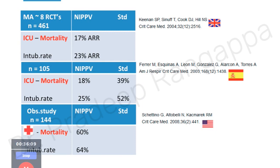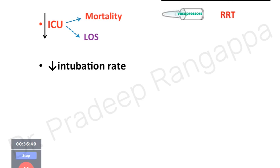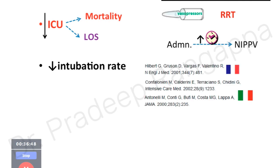Even in hypoxic respiratory failure due to pneumonia or infection, NIV reduces mortality and intubation rates. A US study showed reduced hospital mortality and intubation rates. In immunocompromised patients, NIV reduces ICU mortality, ICU length of stay, and intubation rate — early usage is recommended. Predictors of NIV failure: vasopressor use (hemodynamic instability), renal replacement therapy, or other secondary organ dysfunction. Importantly, delay in NIV administration from admission predicts failure — the sooner NIV is initiated, the better the outcome, even in the ER before ICU transfer.